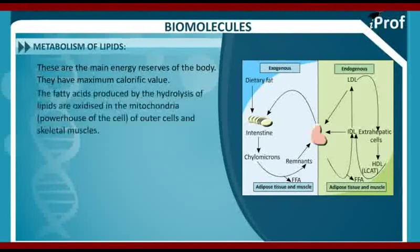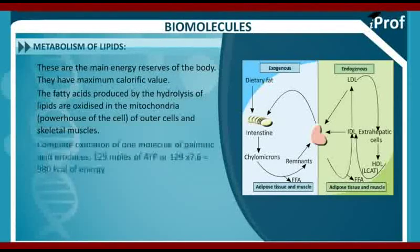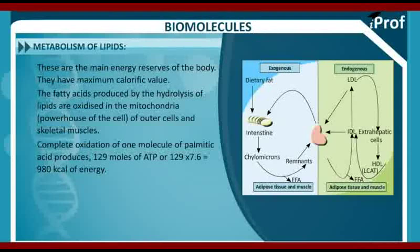The fatty acids produced by the hydrolysis of lipids are oxidized in the mitochondria, which is also considered as the powerhouse of the cell, or in the liver and skeletal muscles. Complete oxidation of one molecule of palmitic acid produces 129 moles of ATP or 980 kilocalories of energy.